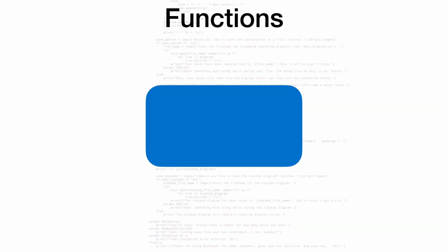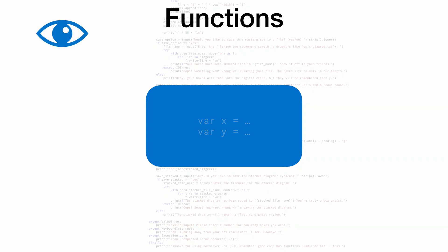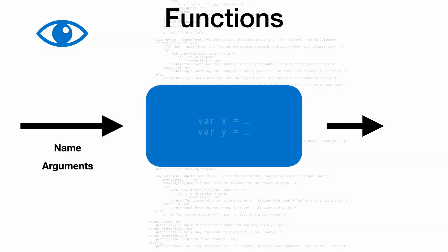I'm talking of course about functions. We make a little boundary, like a wall we put up around this bit of code. From the outside of the function we can't see what's going on inside, we can't access those local variables and we can't see exactly how anything works. What we can see is the things that go into the function, so the things we need to invoke it like the name and the arguments, and the things that come out of the function like the return value or any state that's changed after the function was called.